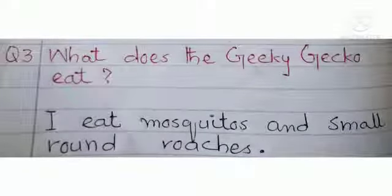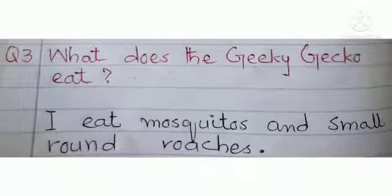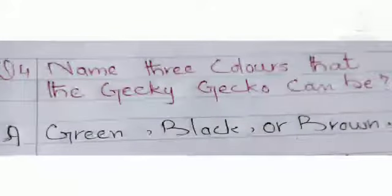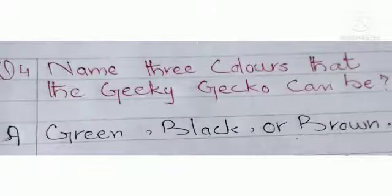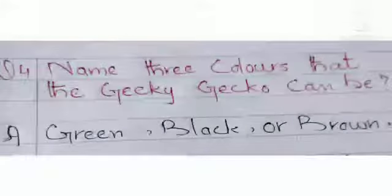Question number three is: What does the Jicky Jacko eat? And the answer is: I eat mosquitoes and small round roaches. Question number four is: Name three colors that the Jicky Jacko can be. And the answer is: Green,